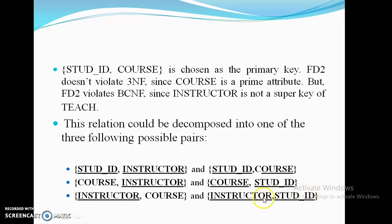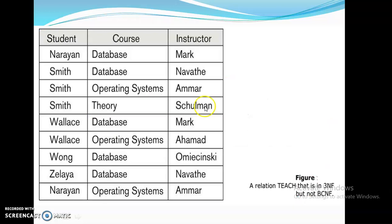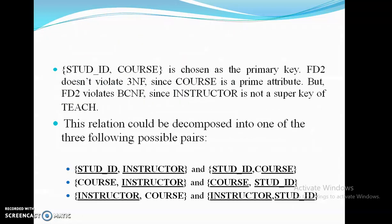In the Instructor-Student ID relation, both are taken as the primary key since Narayan's instructors are Mark and Amar, and Amar is handling another student Smith, while Mark is handling another student Valice. So Student and Instructor together identify a particular tuple — we take these two key attributes together as primary key.